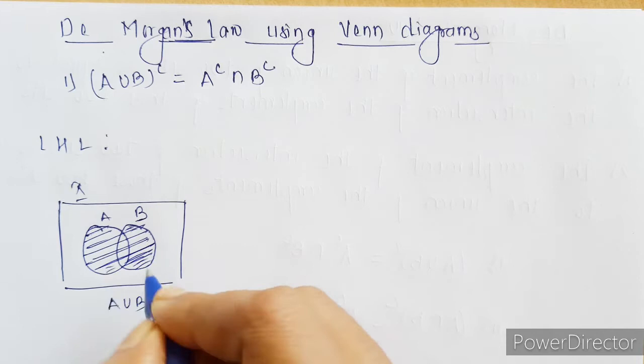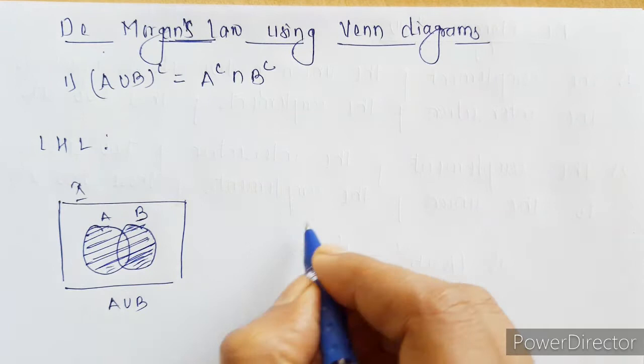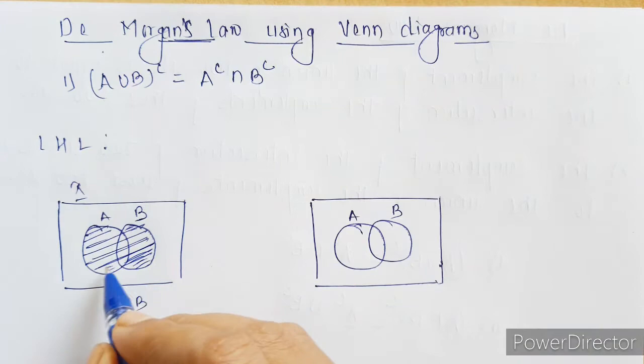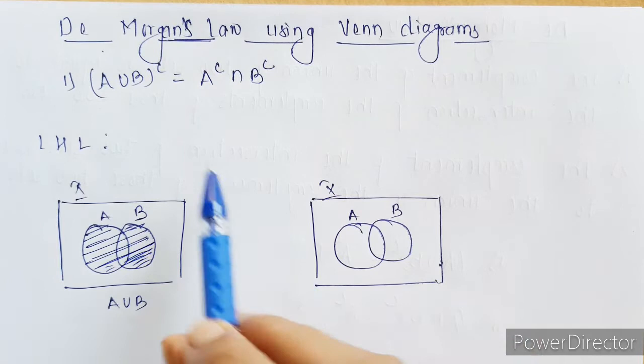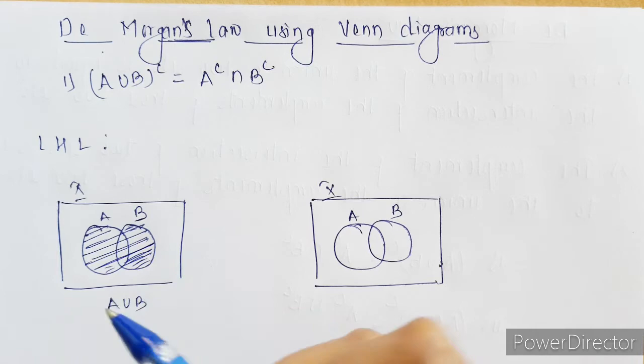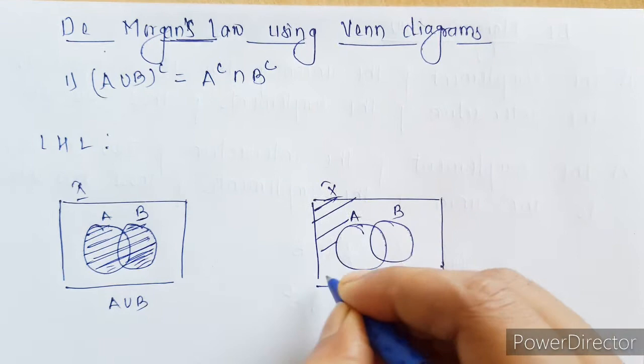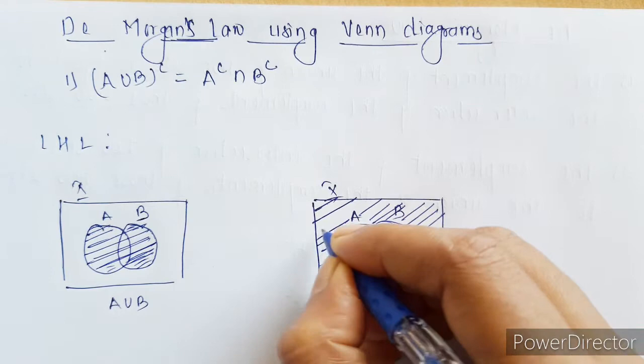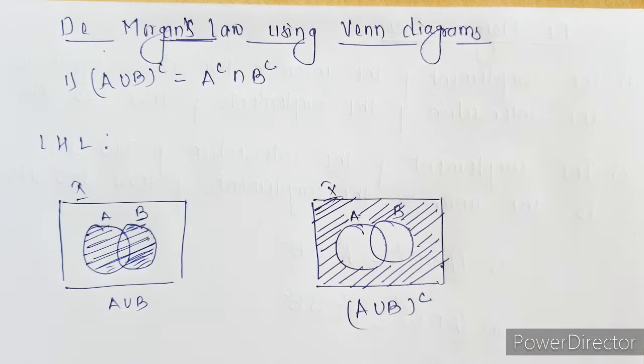Next is A union B complement. Again draw the same Venn diagram. Here we have A and B — this is the A union B part. So A union B complement is going to be the outside part. Since these two circles are A union B, the complement is everything outside circle A and circle B. So whatever we have outside these two circles is nothing but A union B complement.